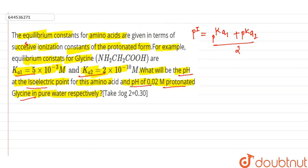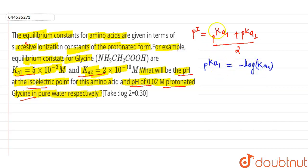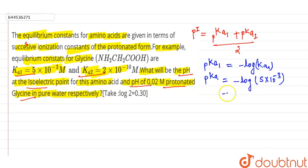We have been given Ka1, and we know that pKa = −log(Ka). So pKa1 = −log(Ka1) = −log(5×10⁻³). By calculating, we get pKa1 = 2.3.